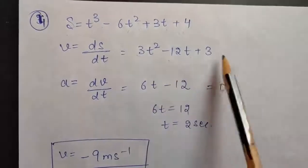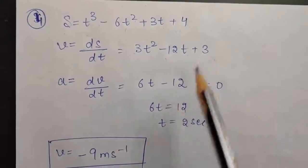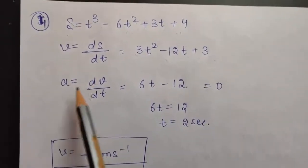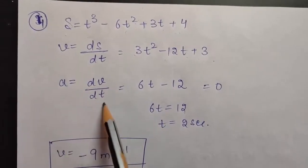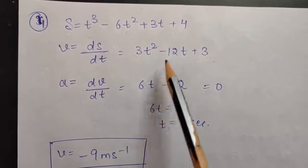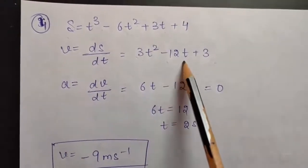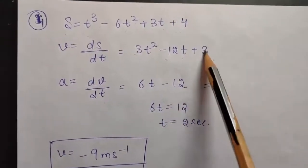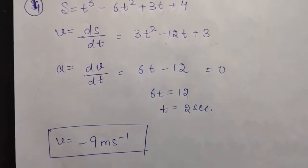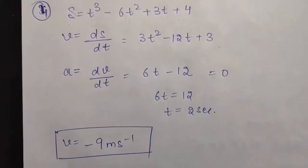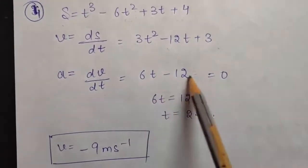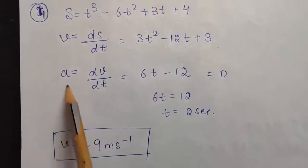This is the velocity in terms of time. Now, to calculate acceleration we will again differentiate velocity with respect to time. That gives differentiation of 3t² as 6t, differentiation of minus 12t as minus 12, and differentiation of 3 is 0. In the question we have to calculate that velocity at which acceleration becomes 0, which means this expression should equal zero since it represents acceleration.